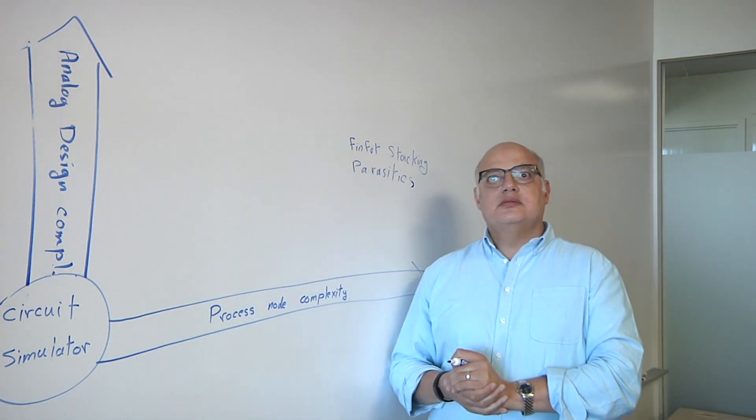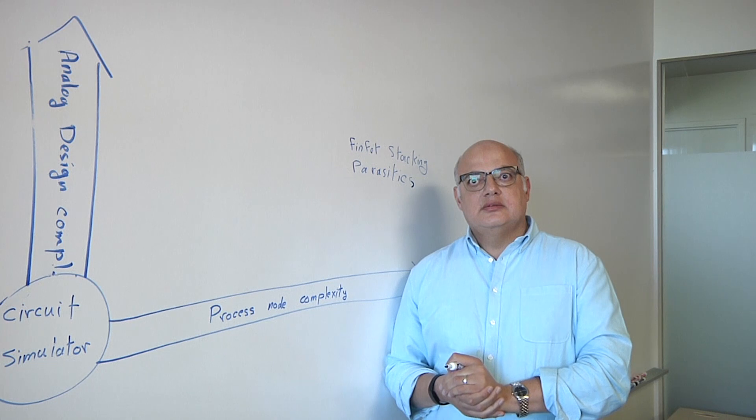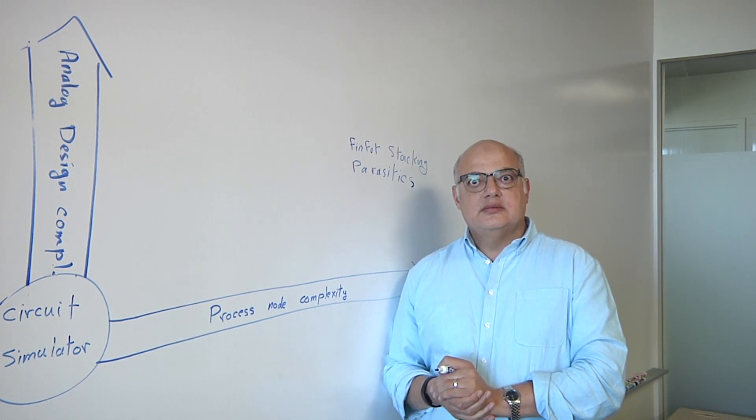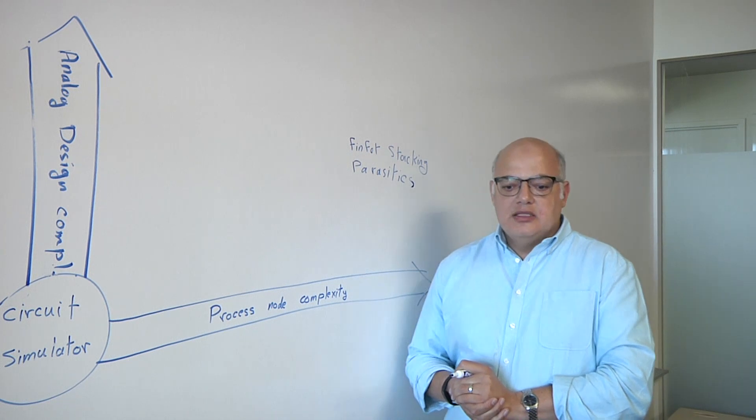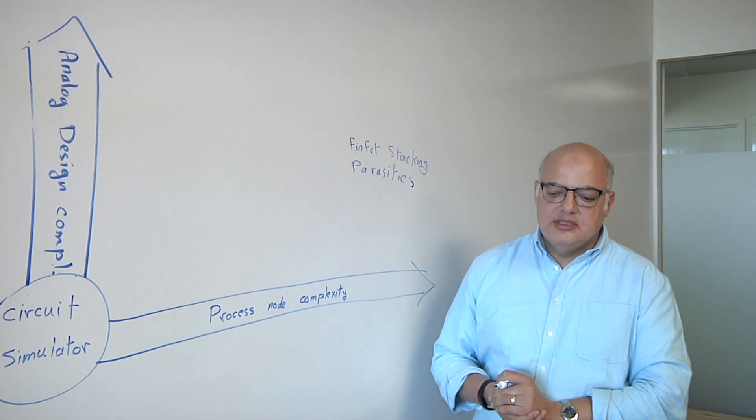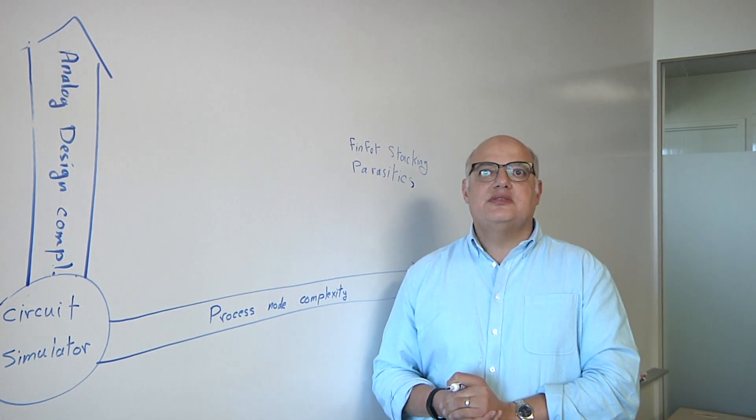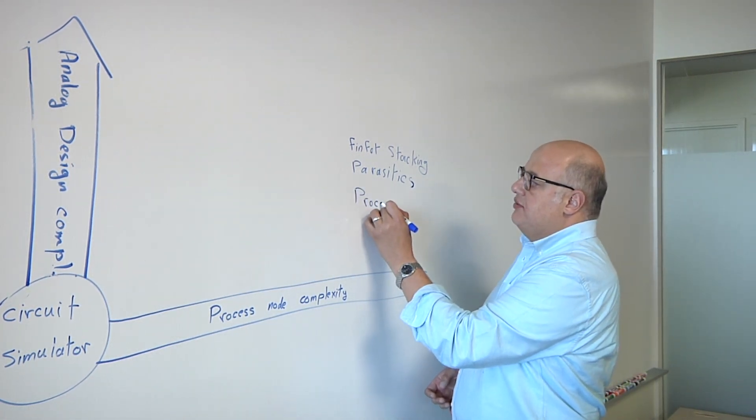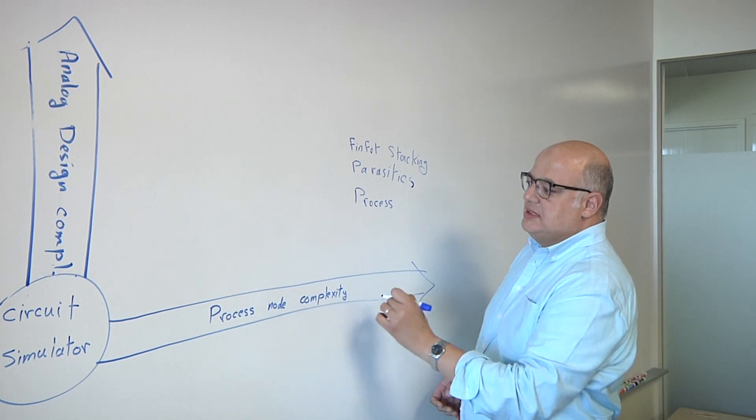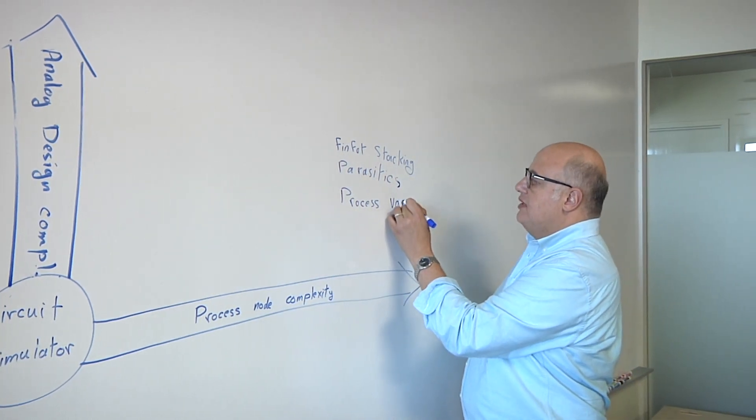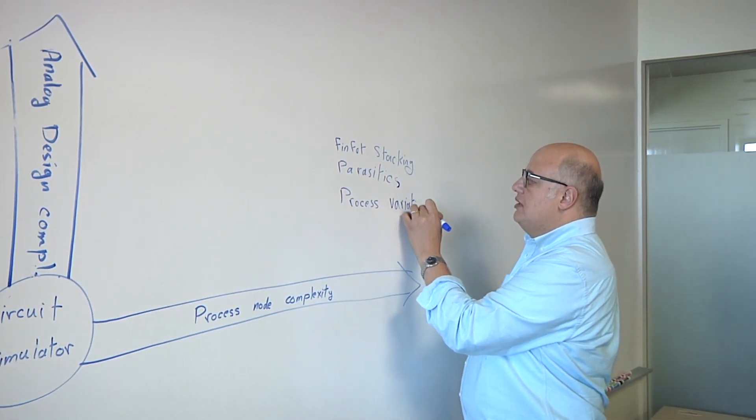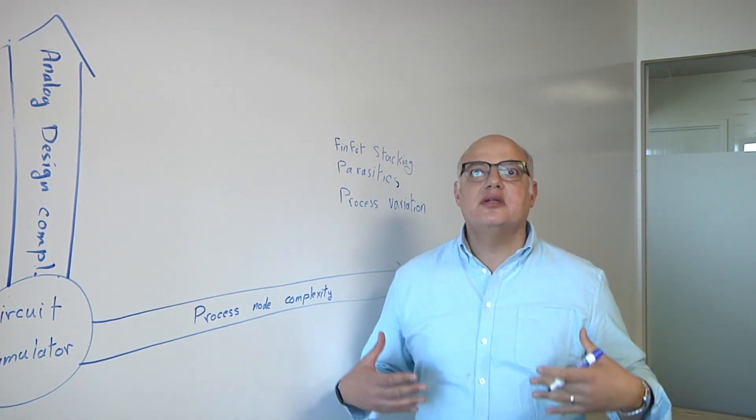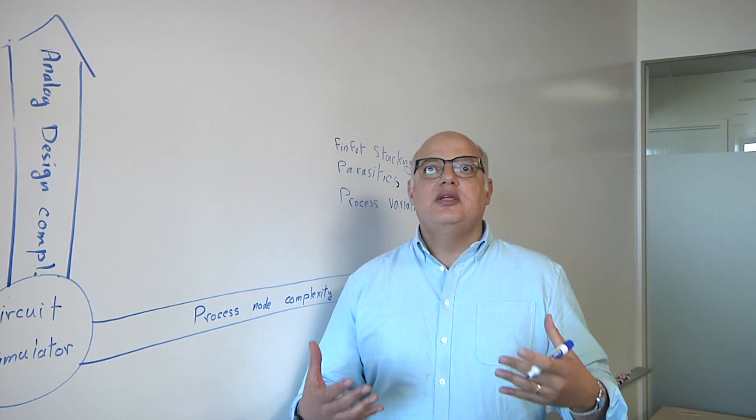What's also become problematic is process variation, particularly as you start moving down node after node. How does that affect the analog circuits? Analog circuits, even more than digital, they are very sensitive to process variation. And process variation is the third component in the process node complexity here. And process variation calls for more analog simulations to run. And that's a bigger constraint on the analog simulator.